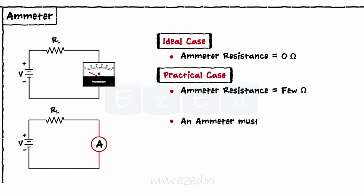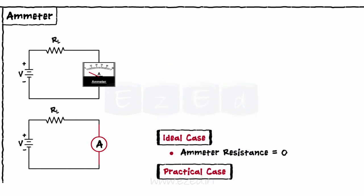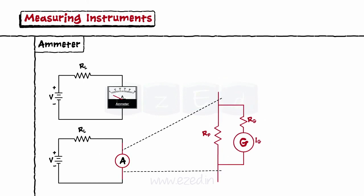This ammeter must be designed to offer very little resistance to the current so that it does not appreciably change any parameter of the circuit. To accomplish this, a small resistor is placed in parallel with the galvanometer to shunt most of the current around the galvanometer. And this combined structure works as an ammeter.